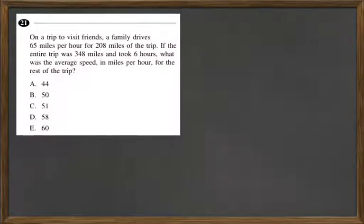On a trip to visit friends, a family drives 65 miles per hour for 208 miles of the trip. If the entire trip was 348 miles and took 6 hours, what was the average speed in miles per hour for the rest of the trip?